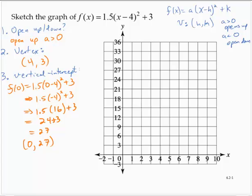So (4, 3) is the vertex. Now, since it opens up, the vertex is the minimum point. So I know everything else is above that point. I have (0, 27).